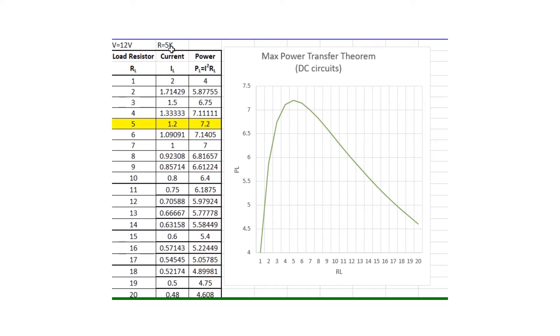Here we have R thevenin is 5k, instead of C thevenin we have R thevenin here, and instead of CL we have RL here. We try different values of RL for this DC circuit. We have one voltage source, 12 volt voltage source as input, and R thevenin, the equivalent resistance of the circuit, and finally the load resistance RL.